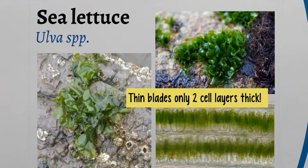Sea lettuce is a type of algae that is bright green and has oval-shaped blades. The blades are very thin, almost transparent, because they are only two cell layers thick. Fun fact: like lettuce, it can be eaten in soups and salads. This species is often used as an indicator of high disturbance, such as trampling.